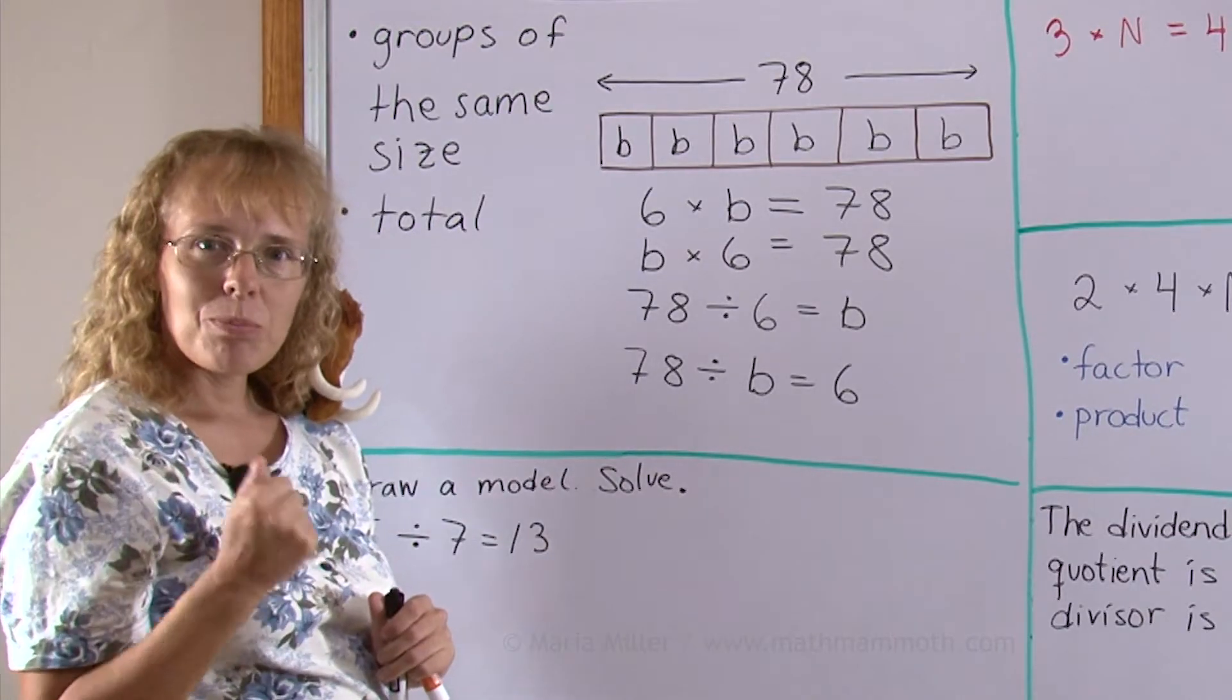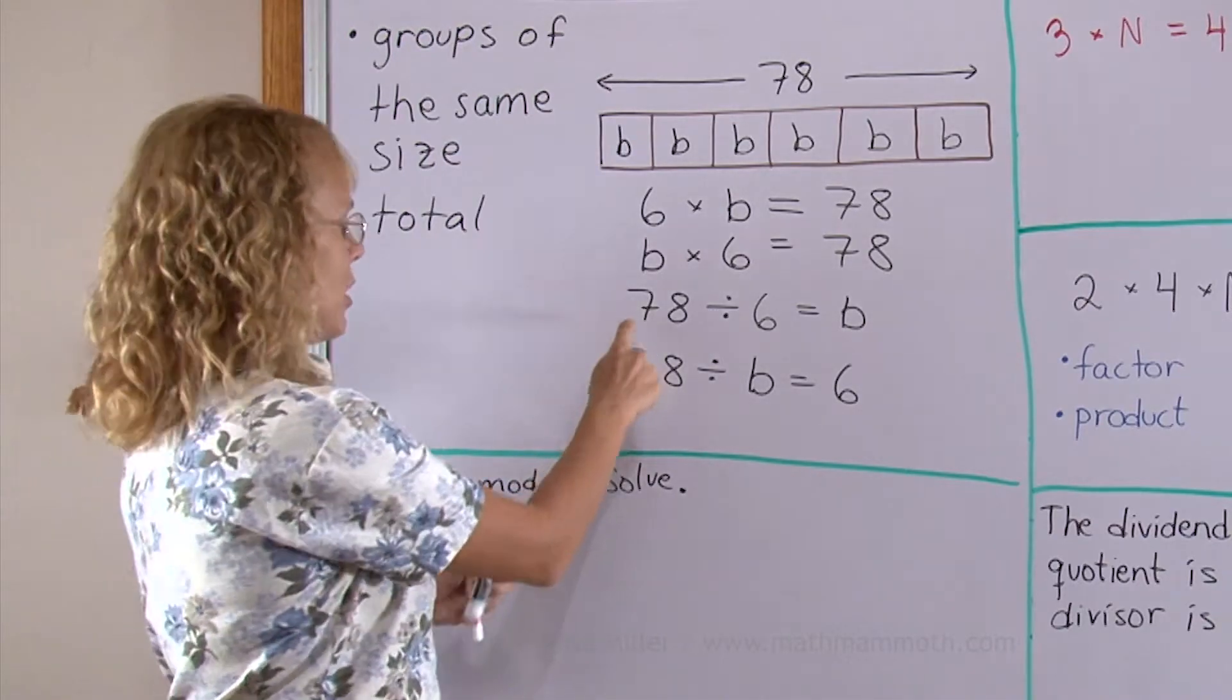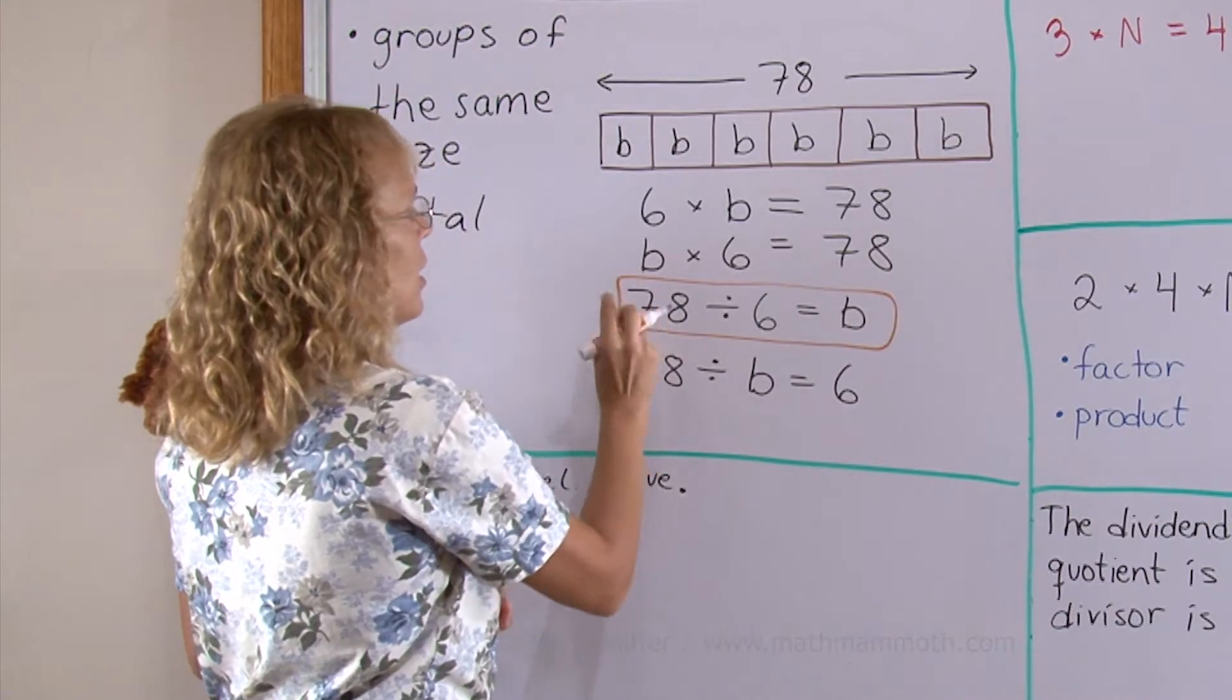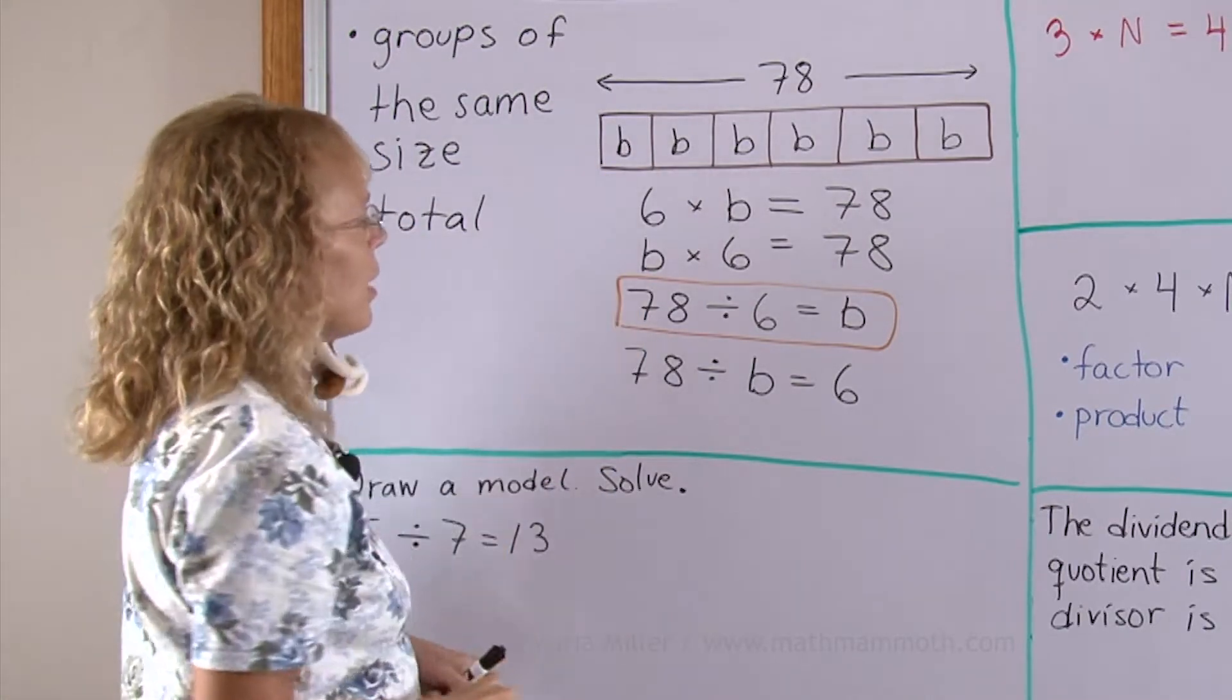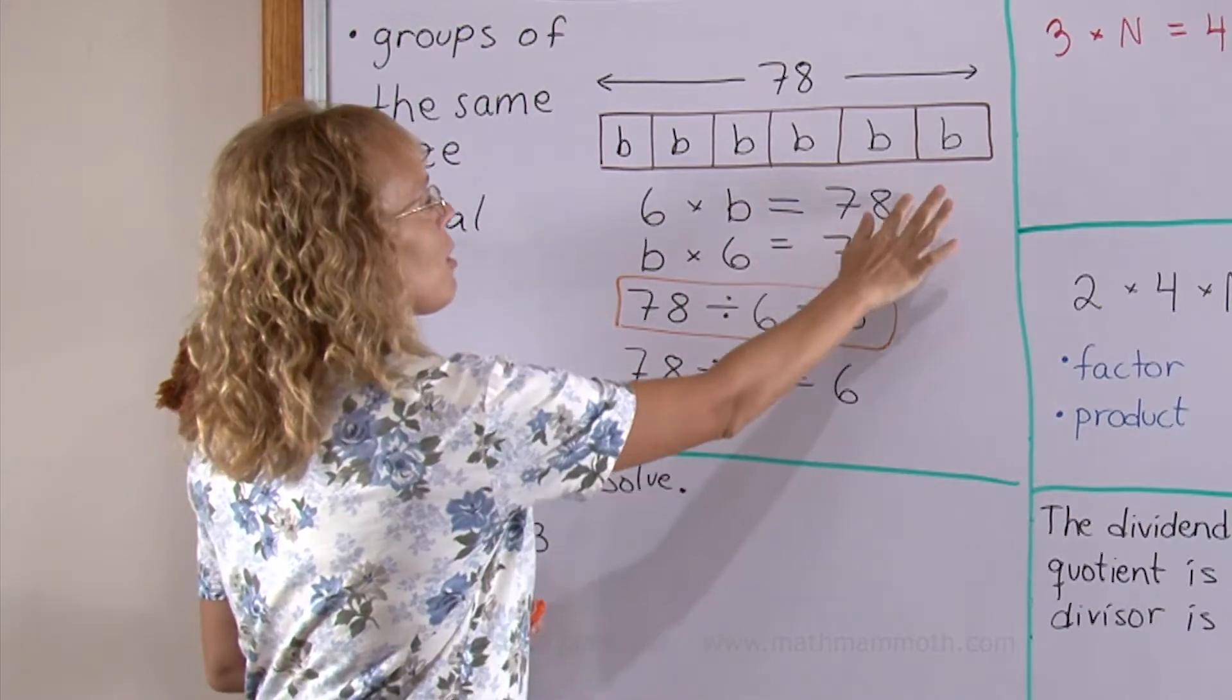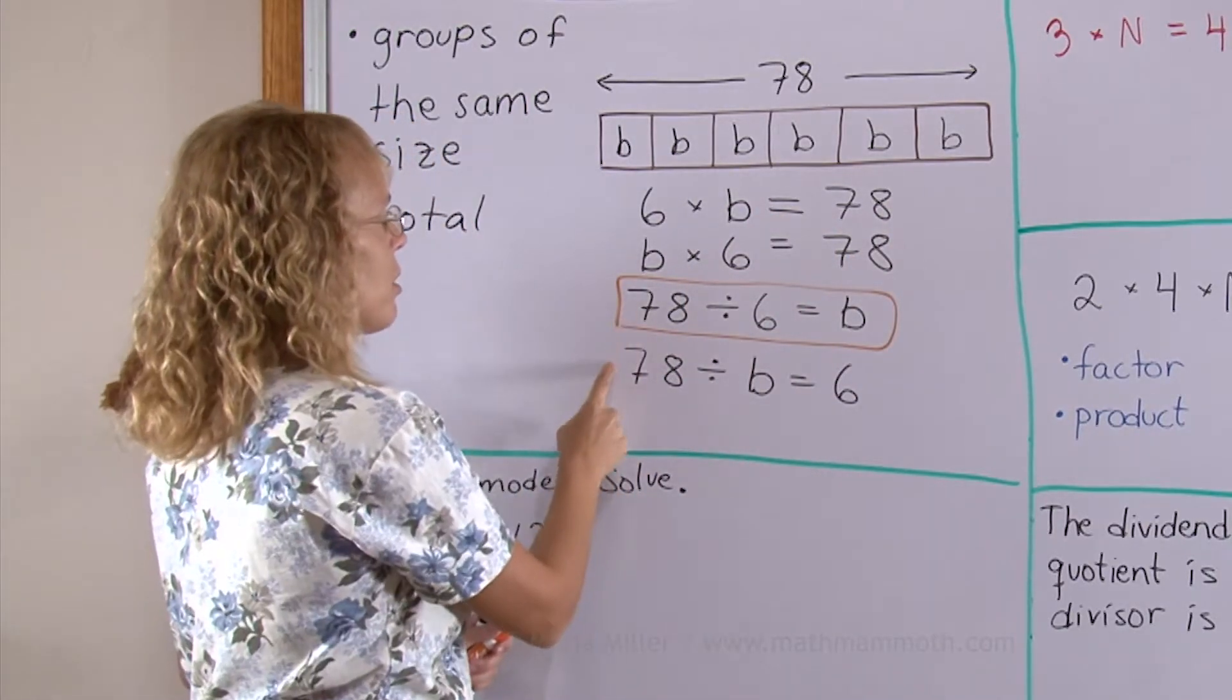If I wanted to know how much B is and I needed to solve B, I would use this one here because it has B equals this calculation, 78 divided by 6. I can calculate 78 divided by 6 equals 13 and get the answer. Notice one more time where the total is. In multiplication the total is the answer here but division always starts with the total.